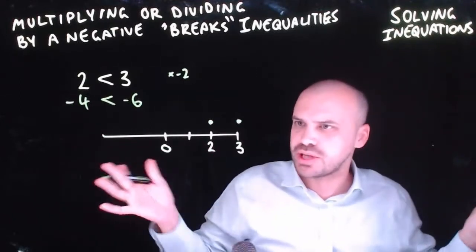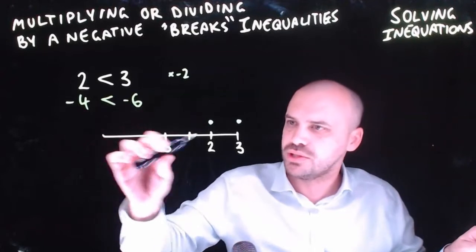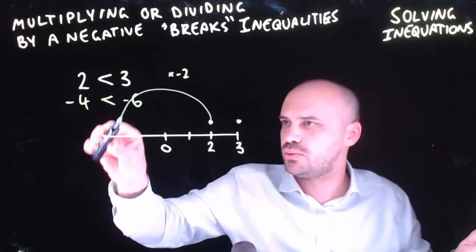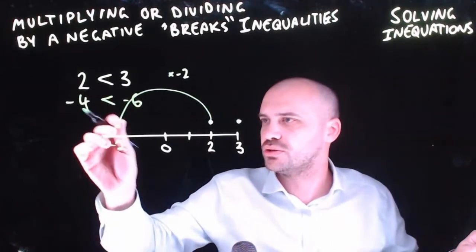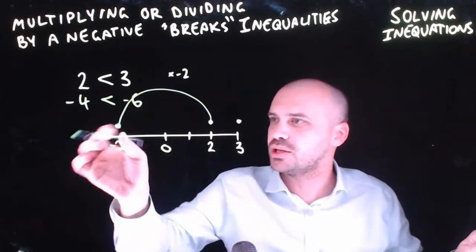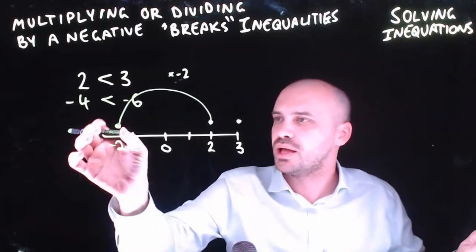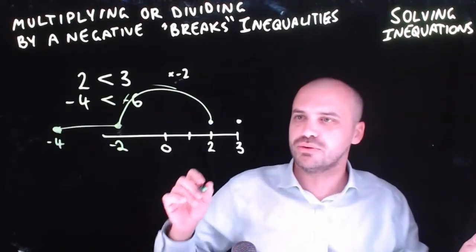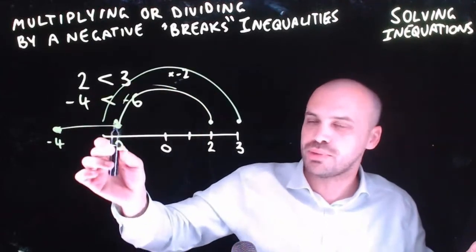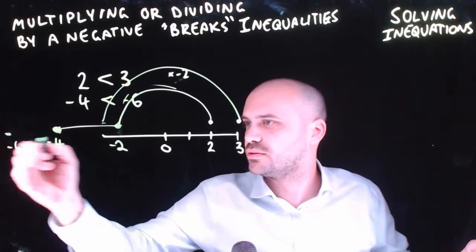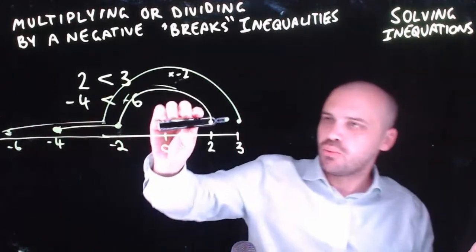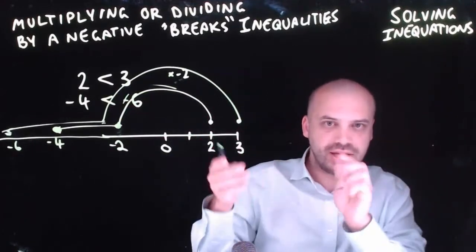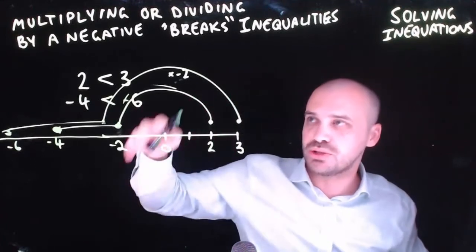What's happening is that when you multiply by a negative on the number line, it's like taking the number and making a rainbow — rotating it to the other side. We multiply by negative 1 and double it, ending at negative 4. The 3 rainbows over to negative 6. They swap sides — one was less than the other, and now they've flipped.